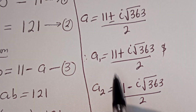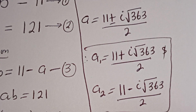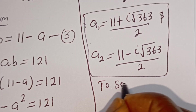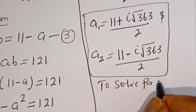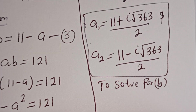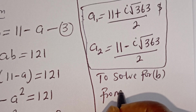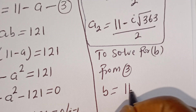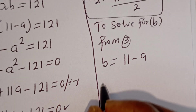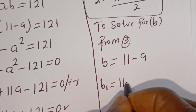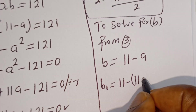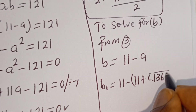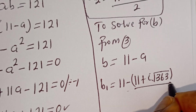We've got the values of A1 and A2. Let's solve for B1 and B2. To solve for B from equation 3, that is, B is equal to 11 minus A.